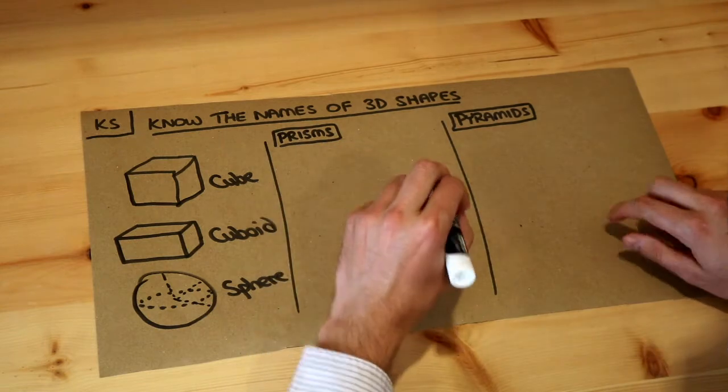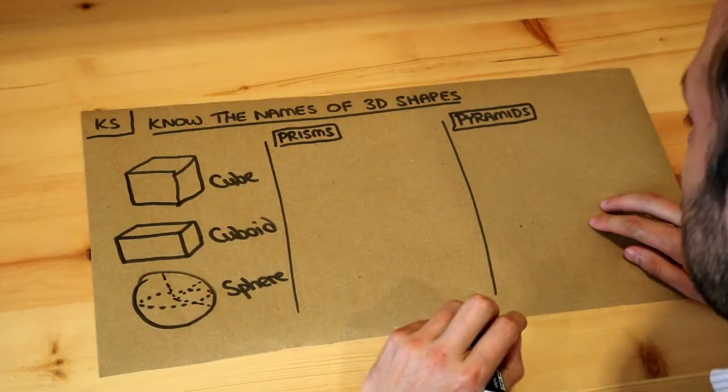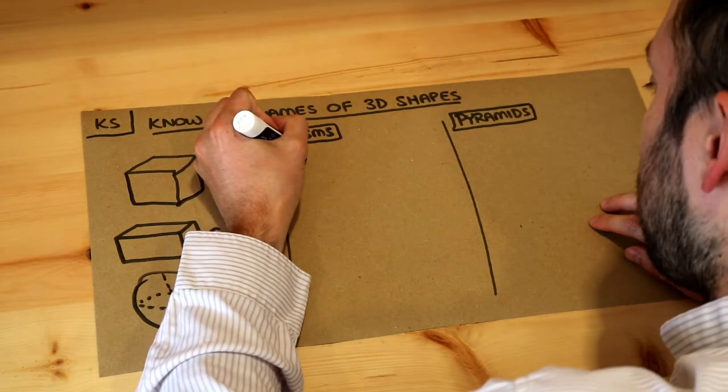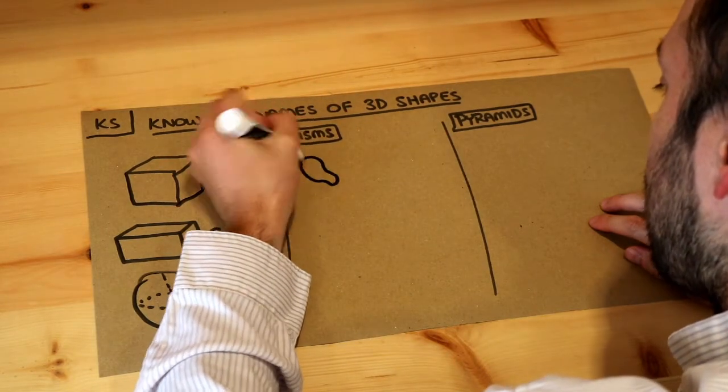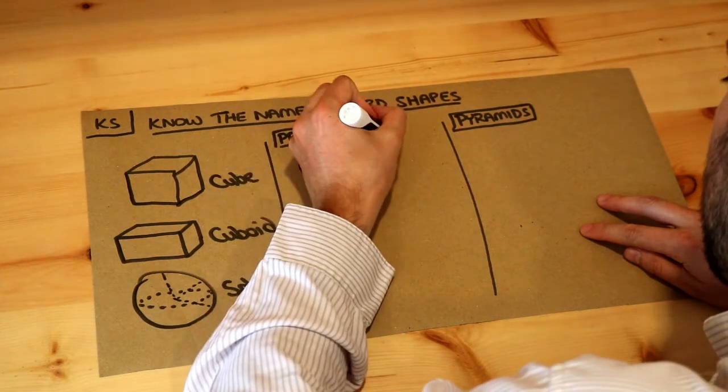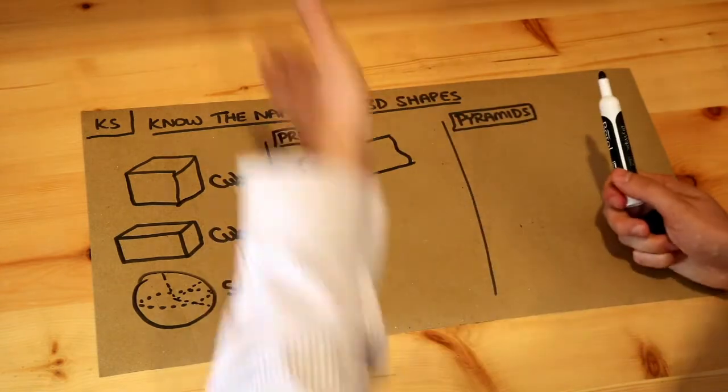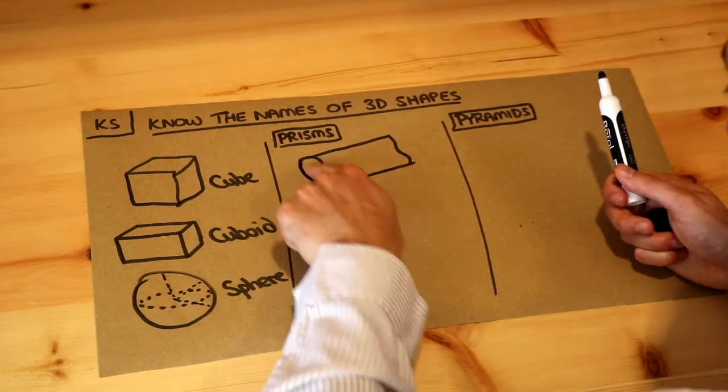Now a prism is a 3D shape where wherever you slice it, you'll see the same cross-section. So if I just draw an example, if you have some kind of 2D shape and then you extend into 3D like this, that is known as a prism. So wherever I slice this, I'm going to see that same shape here.